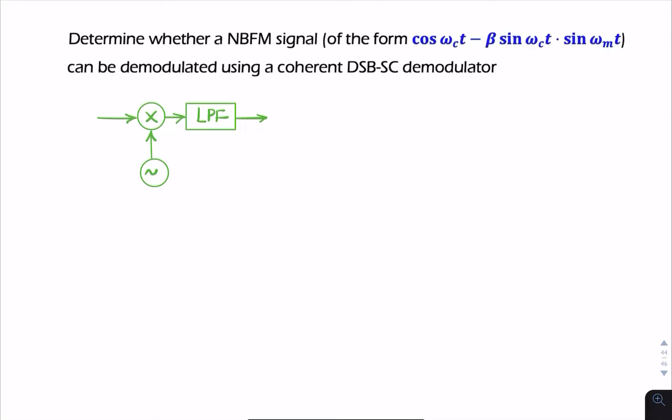This is an interesting question. It asks if we can demodulate narrowband FM using a coherent DSB demodulator. Using the kind of modulator we would expect to demodulate AM, so by multiplying by a local oscillator. So this is how we would recover AM, or DSBSC, or even DSB with a large carrier.